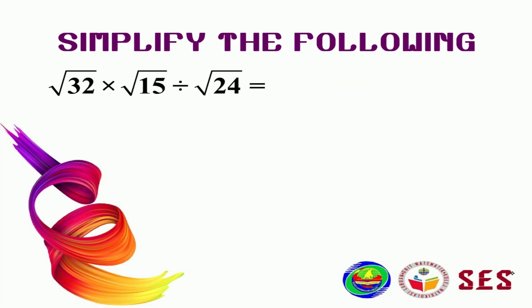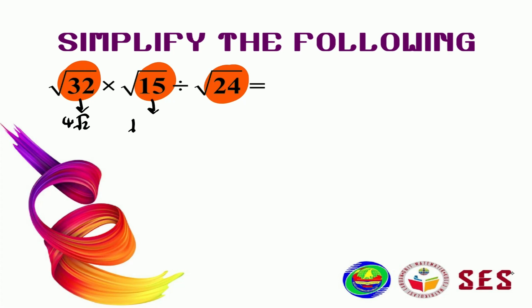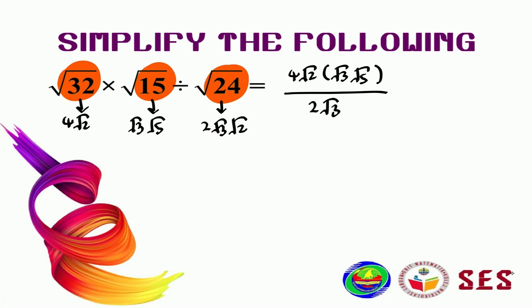Let's try the next one. Always remember to simplify first. Pause the video and simplify on your own, then continue. Square root of 32 becomes 4 square root of 2. Square root of 15 can be simplified to square root of 3 multiplied by square root of 5. And square root of 24 can be simplified to 2 square root of 3 multiplied by square root of 2. Rewriting, we have 4 square root of 2 multiplied by square root of 3 times square root of 5, divided by 2 square root of 3 times square root of 2. The square root of 2 and square root of 3 cancel, and 4 divided by 2 is 2. So our final answer is 2 square root of 5.